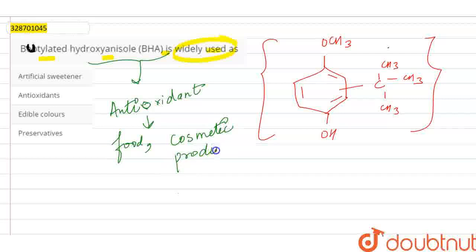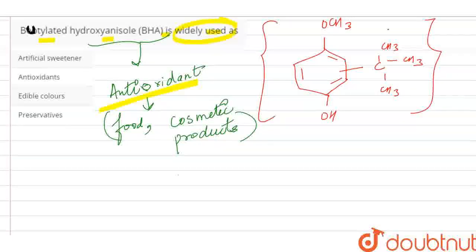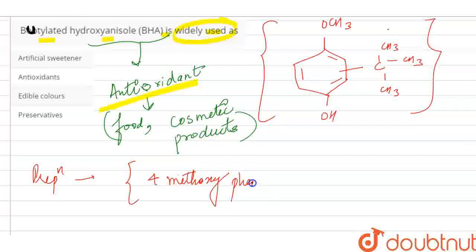It is used in makeup products for skin balancing. So majorly we got to know that BHA is an antioxidant. Let me talk about the preparation - BHA is prepared from 4-methoxyphenol with isobutylene.